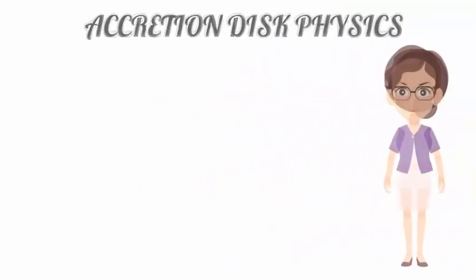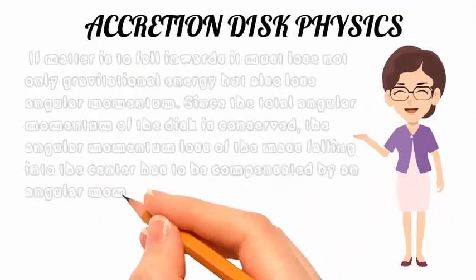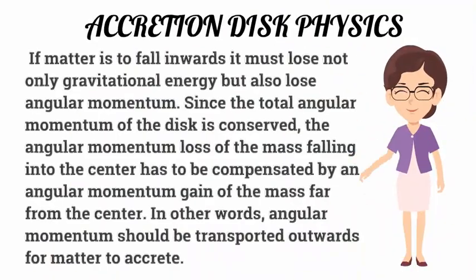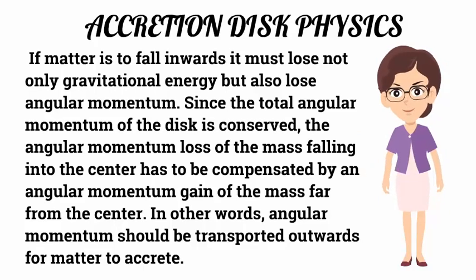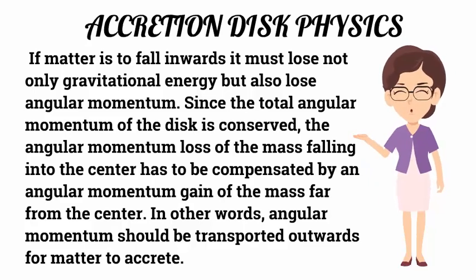Accretion disk physics: if matter is to fall inwards, it must lose not only gravitational energy but also angular momentum. Since the total angular momentum of the disk is conserved, the angular momentum lost by mass falling into the center must be compensated by an angular momentum gain of mass far from the center. In other words, angular momentum must be transported outwards for matter to accrete.